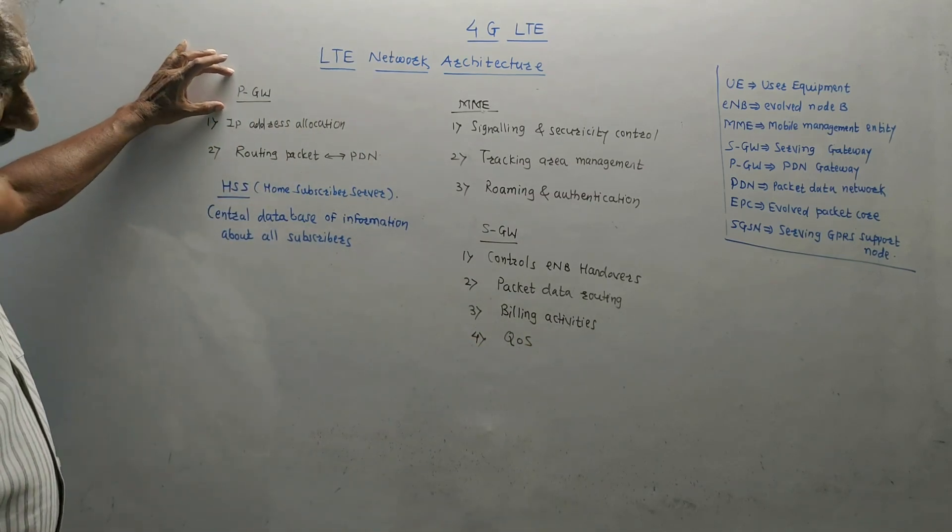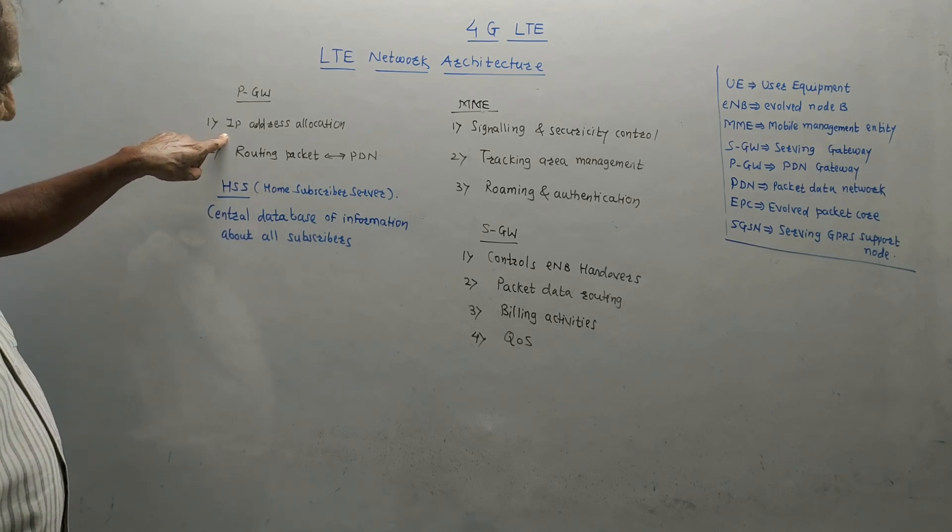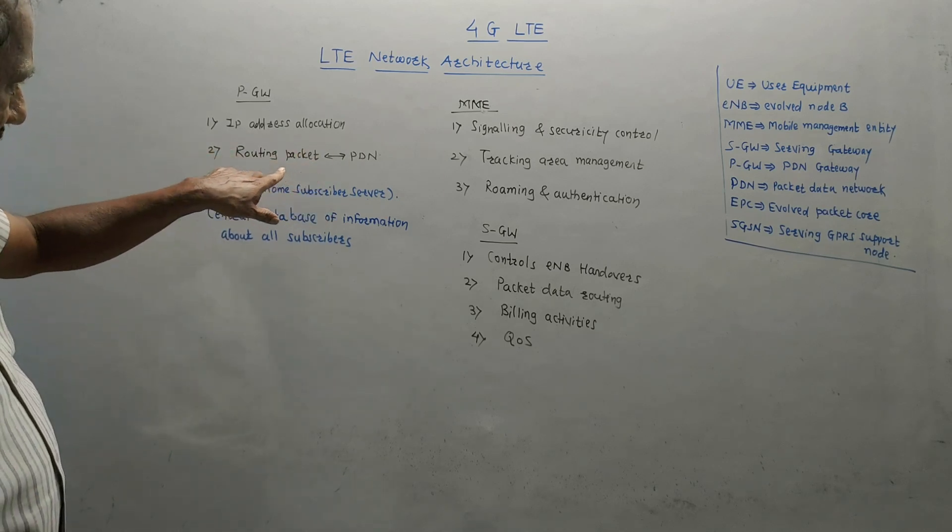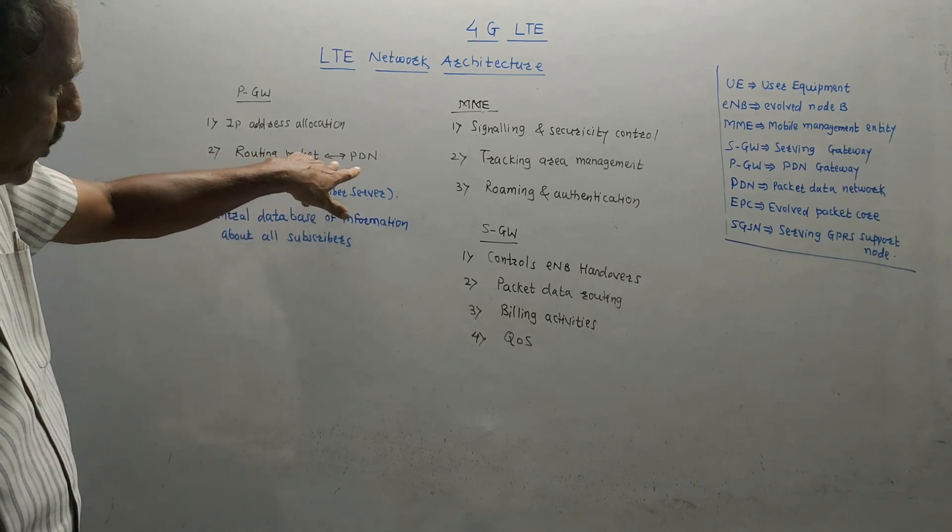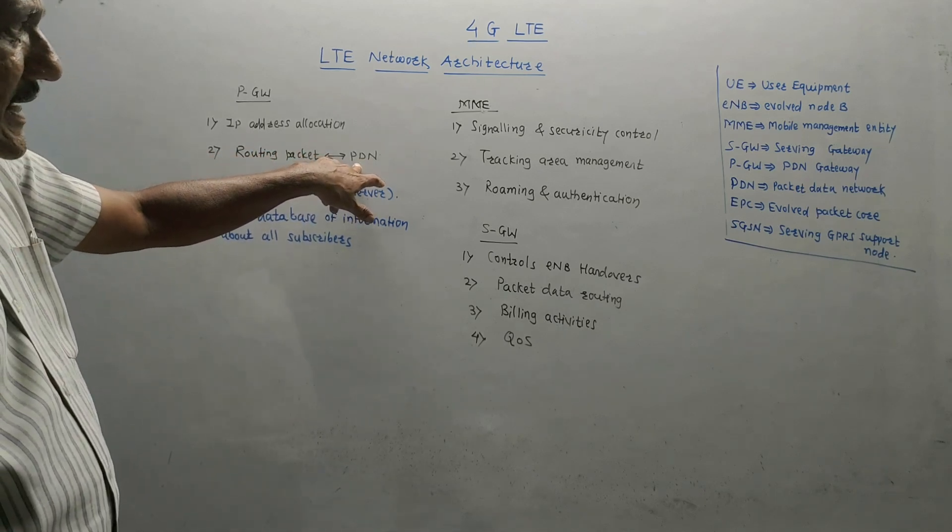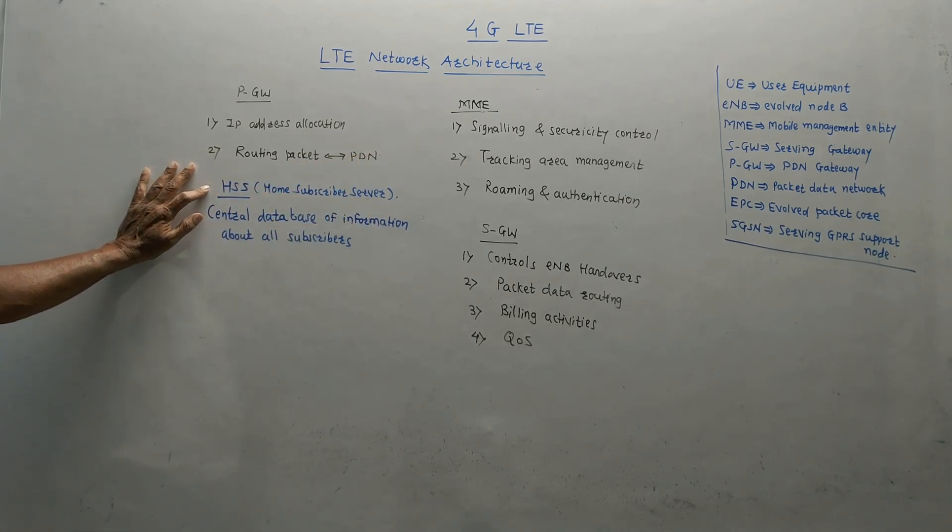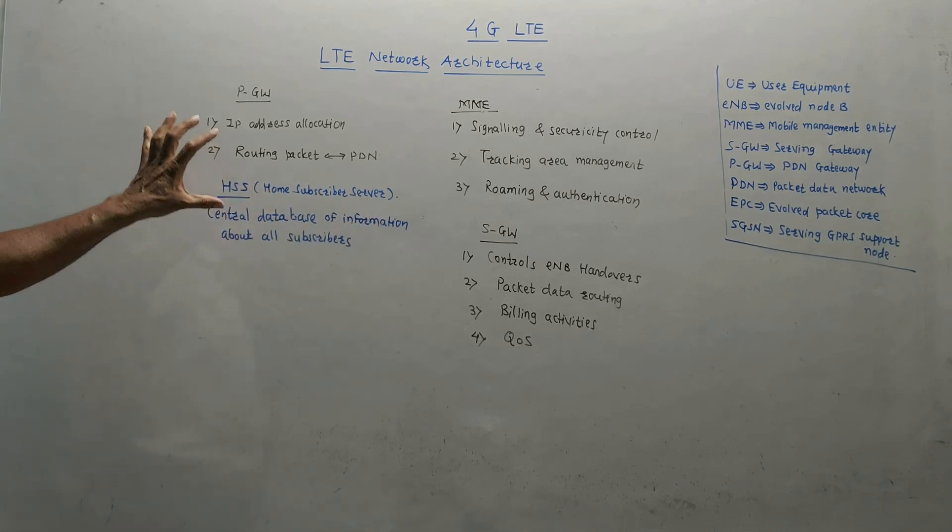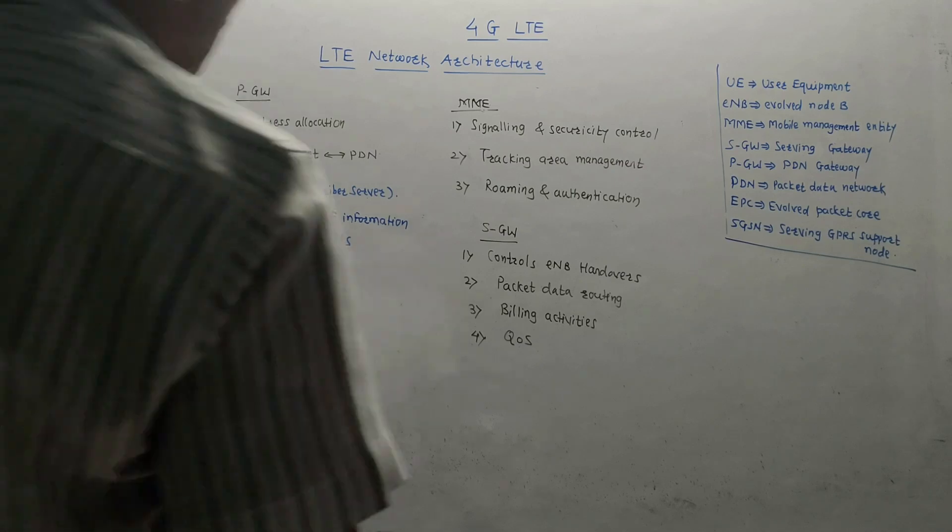Then PDN gateway, that is PGW. It basically allocates the IP addresses and it provides two-way communication. It activates the routing packets to and from PDN, packet data network. Then HSS, that is home subscriber service. It basically contains collection of database related to all subscribers.